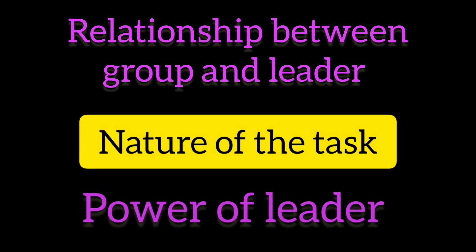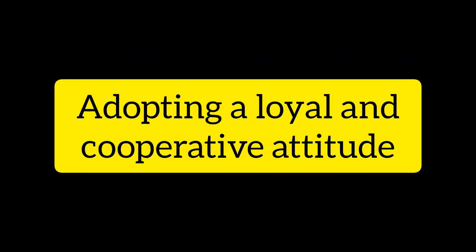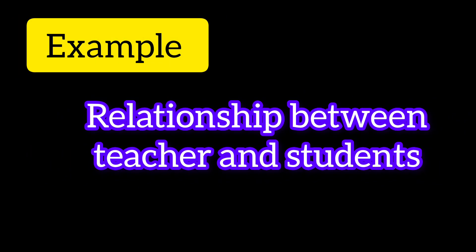The first variable — the relationship between group and leader — is all about trust. When a leader fully trusts their employees, they adopt a loyal and cooperative attitude and prove themselves in favor of the organization. For example, does your students trust you as a teacher in the classroom? The more they do, there is a high degree of teacher-student relationship, and the more favorable the situation is.